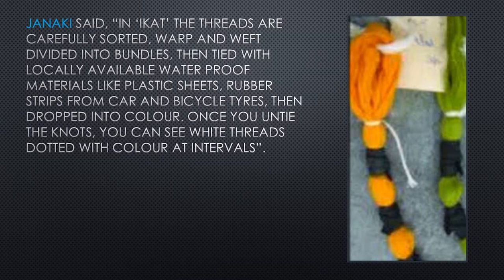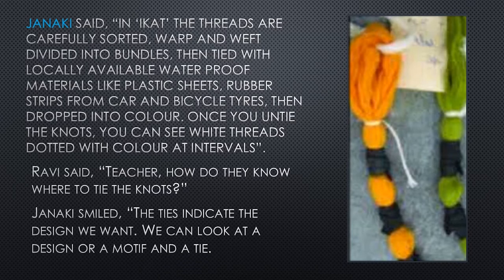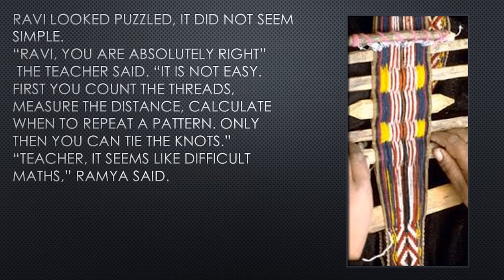'Once you untie the knots, you can see white threads dotted with color at intervals.' Ravi said, 'Teacher, how do they know where to tie the knots?' Janaki smiled. 'The ties indicate the design we want. We can look at a design or motif and then tie.' Ravi looked puzzled — it did not seem simple. 'Ravi, you are absolutely right,' the teacher said. 'It is not easy. First you count the threads, measure the distance, calculate when to repeat a pattern. Only then you can tie the knots.'